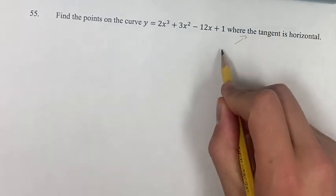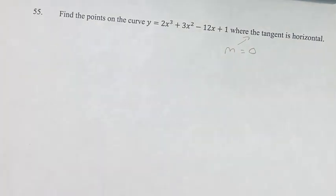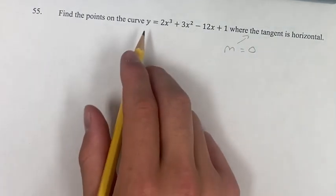We can think of this as the slope of the tangent line being equal to 0, and the slope of the tangent line we can find using the derivative.